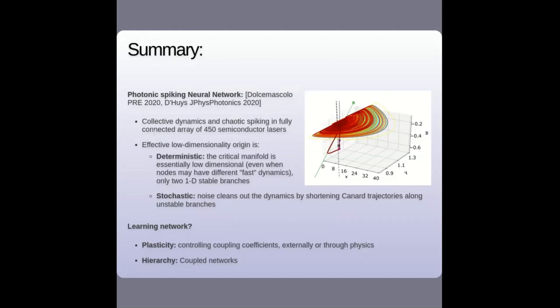This is a cool photonic spiking network, but it is not a learning network yet — that is on the agenda. There are two directions to explore: first, plasticity — controlling the coupling coefficients more efficiently, currently done very manually by opening or closing the iris. This could be done externally via a spatial light modulator or through physics, which would be very interesting. Second, a hierarchy of networks, since hierarchical structure is clearly present in biological neural networks. We have a few of these networks and can try coupling them to see what emerges.